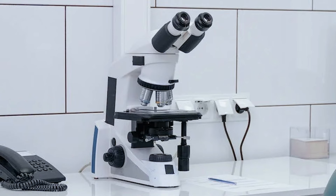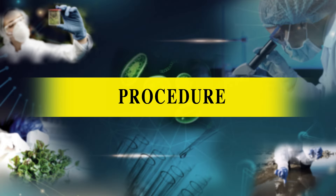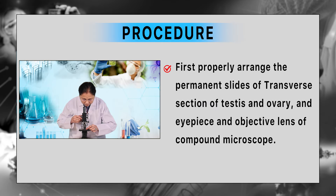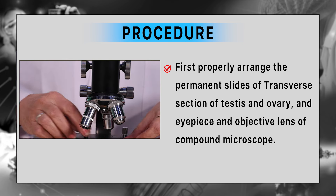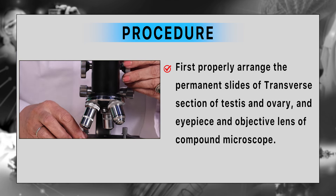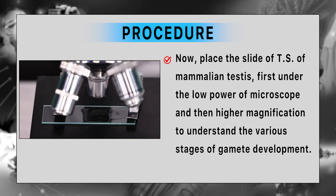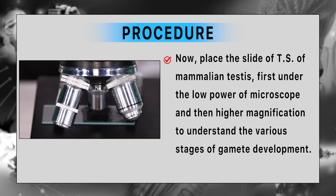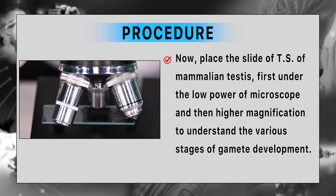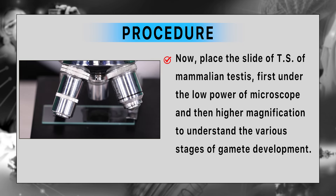For this session, we require a compound microscope, permanent slides, and images of transverse sections of mammalian testes and ovary. Let's first adjust the eyepiece and objective lens of the compound microscope and then arrange the permanent slides of transverse sections of testes and ovary. Place the slide of TS of mammalian testes first under low power of the microscope and then under higher magnification to understand the various stages of gamete development.